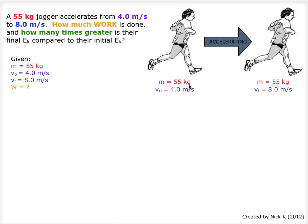As we can see in the picture, the 55 kilogram jogger at an initial velocity of 4.0 meters per second is accelerating to a final velocity of 8.0 meters per second.